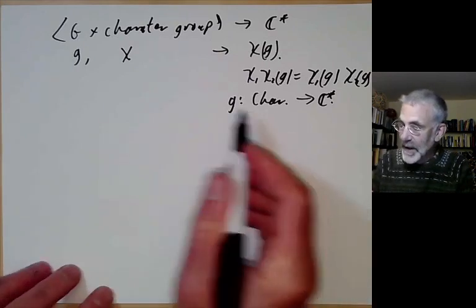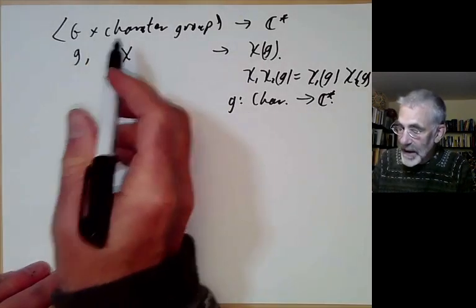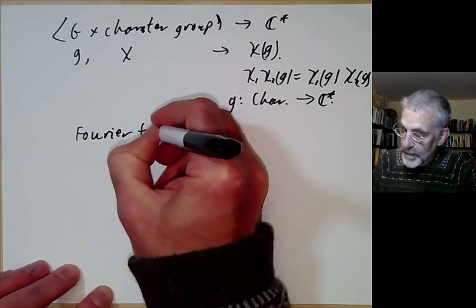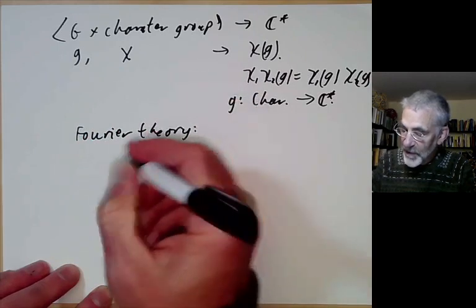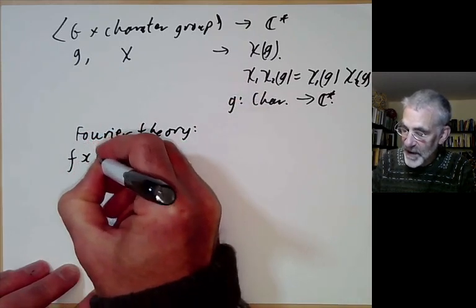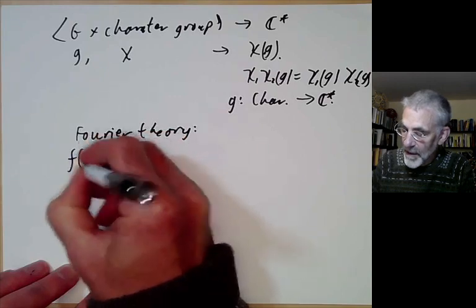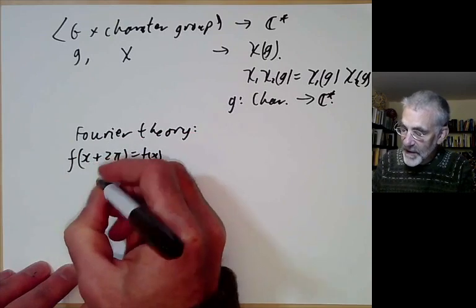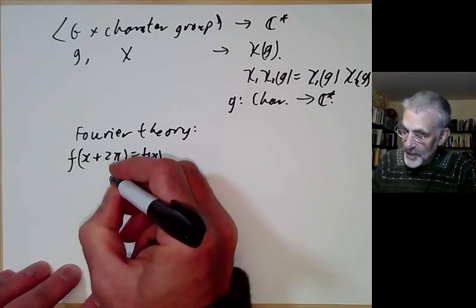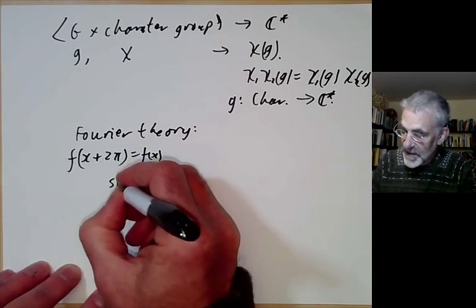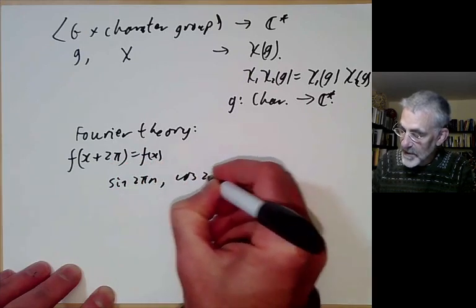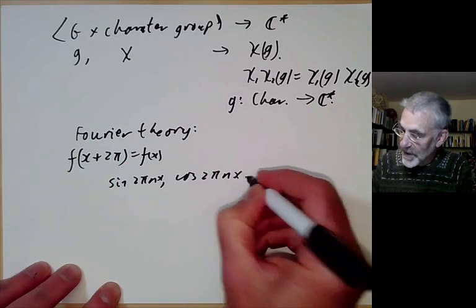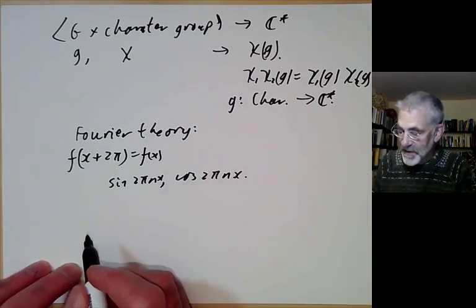Characters are very closely related to Fourier theory. If we've got a periodic function f such that f of x plus 2pi equals f of x on the real numbers, then you can generally write f as a sum of functions sine and cosine with various Fourier coefficients.